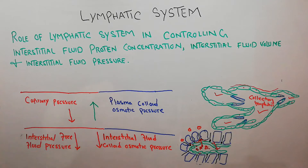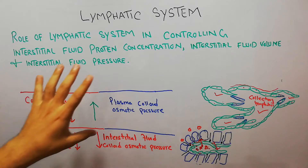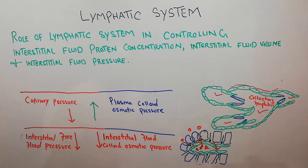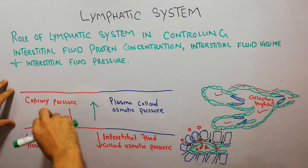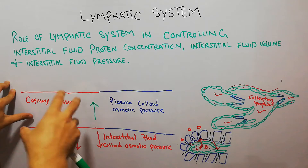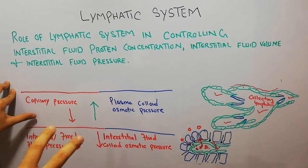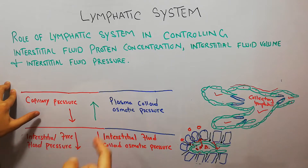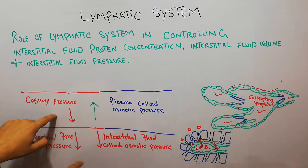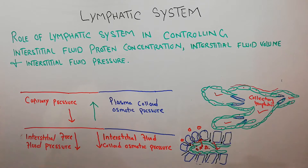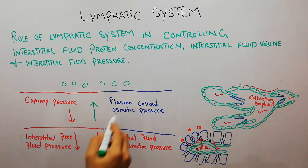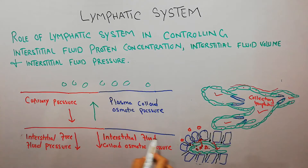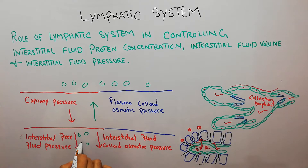We have discussed the basics of the lymphatic system and this is going to be the last lecture on it. We have discussed again and again that at the capillary level, the blood basically has four different forces. On both sides we have the interstitial fluid or the interstitium, and here we have the capillary.